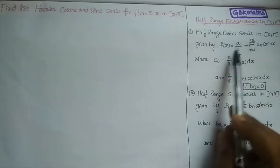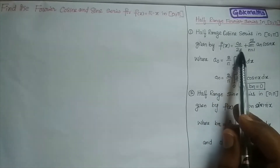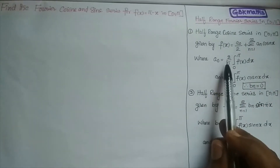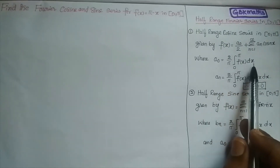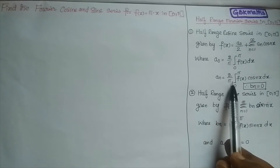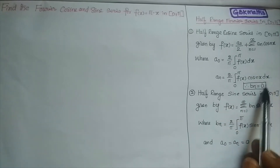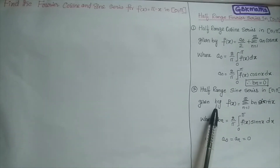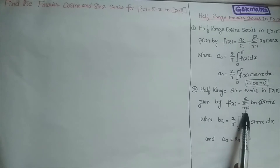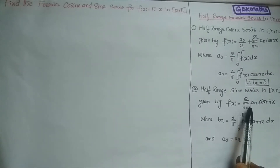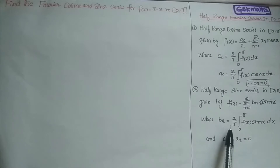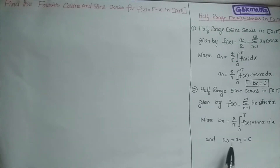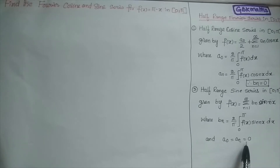So half range cosine series is given by f(x) = a₀/2 + summation n=1 to infinity aₙ cos(nx), where a₀ = (2/π) integral 0 to π f(x) dx, and aₙ = (2/π) integral 0 to π f(x) cos(nx) dx, and bₙ = 0. Similarly, half range sine series: f(x) = summation n=1 to infinity bₙ sin(nx), where bₙ = (2/π) integral 0 to π f(x) sin(nx) dx, and a₀ and aₙ are zeros.